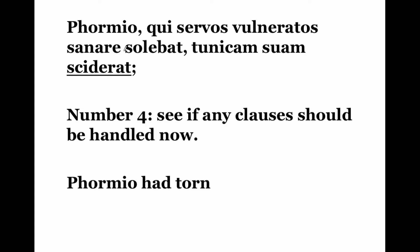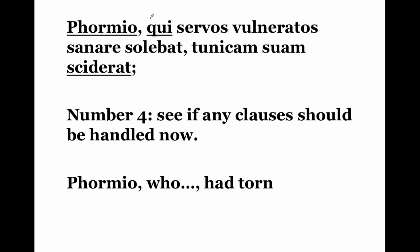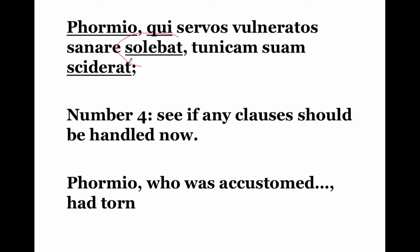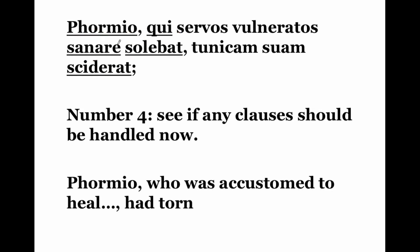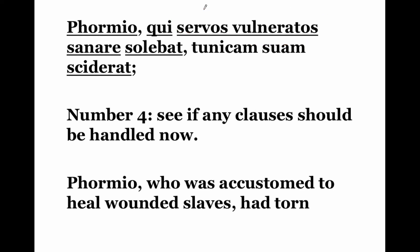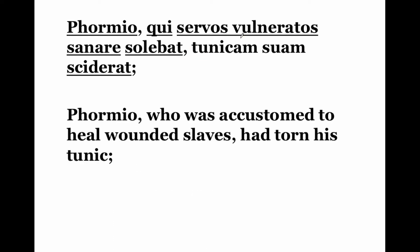Let's see if there are any clauses that should be handled now. Sometimes you'll have a clause you decide shouldn't be introduced until the end. Formio qui — Formio who. It looks like we do want to translate this now. Solebat — was accustomed, used to do an action — and it completes its action with the infinitive sanare. Formio who was accustomed to heal. What's left in the clause is our direct object: he was accustomed to heal servos vulneratos, wounded slaves. Formio who was accustomed to heal wounded slaves had torn — what? The only thing left is tunicam suam — had torn his tunic.